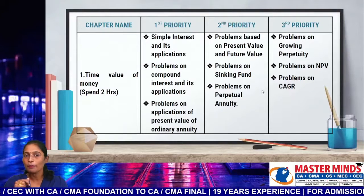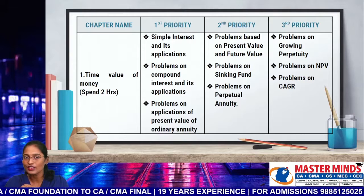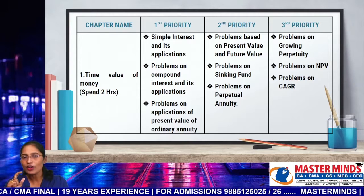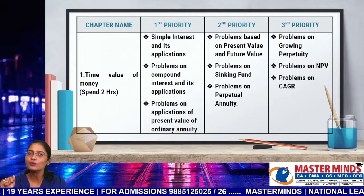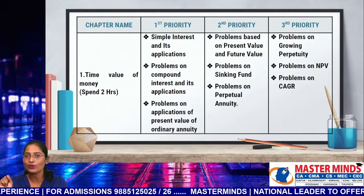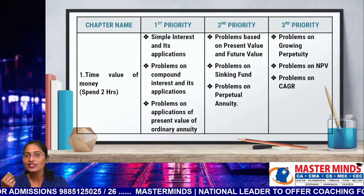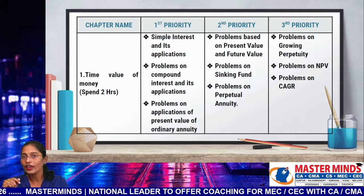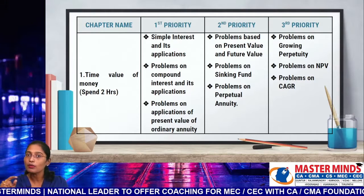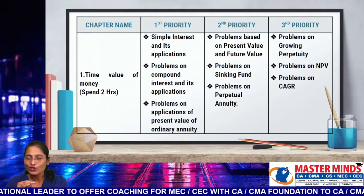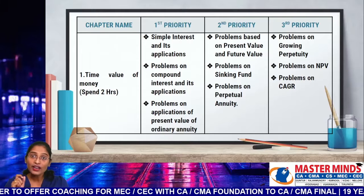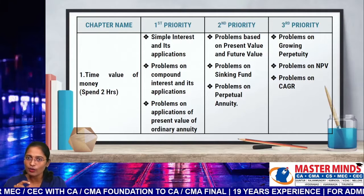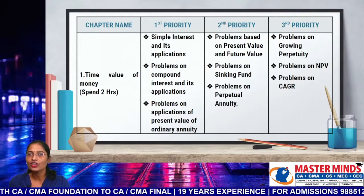Now I am going to tell you about the preparation strategy for the very important topic: Time Value of Money. Briefly, the first priority models are: simple interest and its applications, problems on compound interest, and problems on applications of present value of ordinary annuity. Second priority: problems on present value and future value, problems on sinking fund, and problems on perpetual annuity. Third priority: problems on growing perpetuity, problems on net present value, and problems on compound annual growth rate. Try to spend at least two hours on Time Value of Money — at least one and a half hours for first priority models, and the rest on second and third priority models.